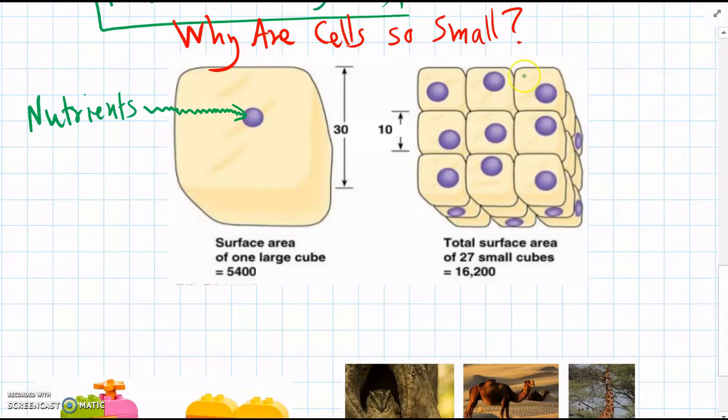But if an organism is made of lots of small cells, then it doesn't take long for nutrients to get in to each cell, because nutrients can pass all around the outside of the cells and they can enter from every direction.